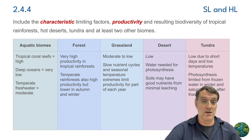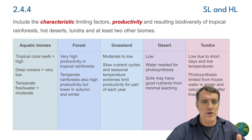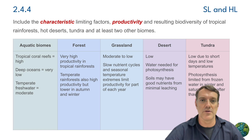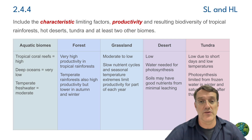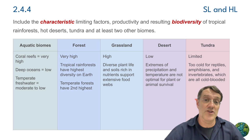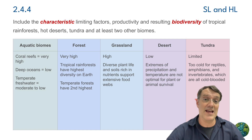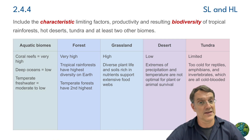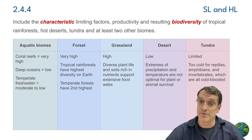The productivity patterns we see across biomes directly relate to their abiotic conditions. From the high productivity of tropical rainforests to the low productivity of deserts and tundra, we can trace these differences back to the availability of water, light, and nutrients. Biodiversity patterns follow similar trends but aren't identical — some biomes, like temperate forests, maintain high biodiversity despite having lower productivity than tropical rainforests, reminding us that multiple factors influence species diversity.